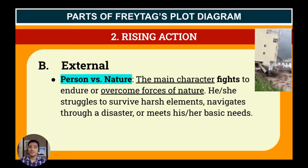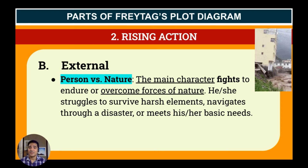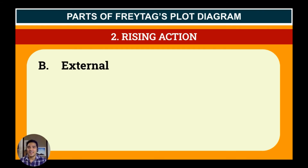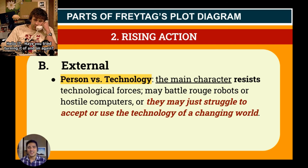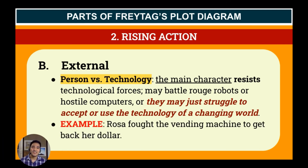Next, we have person versus nature, where the main character fights to endure or overcome forces of nature — struggling to survive harsh elements, navigating through a disaster, or meeting basic needs. For instance, Lisa's family hid in the basement last night because of the tornado, so the nature here is the tornado. Lastly, under external, we have person versus technology, where the main character resists technological forces, may battle rude robots or hostile computers, or may struggle to accept technology in a changing world. For example, Rosa fought the vending machine to get back her dollar — Rosa had a problem with the vending machine, which is part of technology.